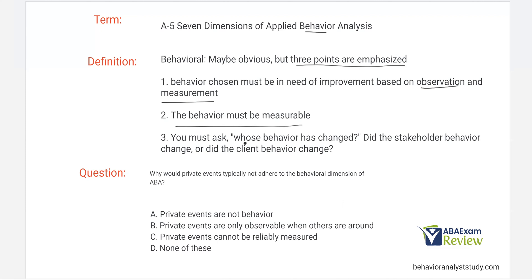Two, the behavior must be measurable. If it isn't measurable, how do we plan to change it? It's the reason we deal in public events — they're much more likely to be observable, measurable, and reliable. Three, you must ask: whose behavior has changed? We're looking to change the client's behavior, not just the stakeholder's. If the client's behavior hasn't changed and only the stakeholder's has, it's not going to generalize effectively elsewhere.